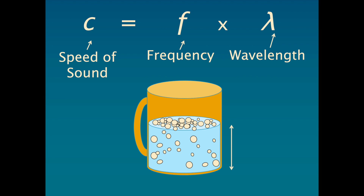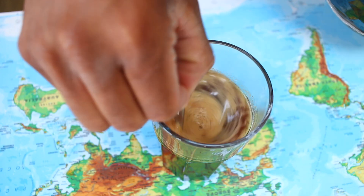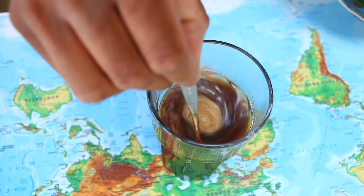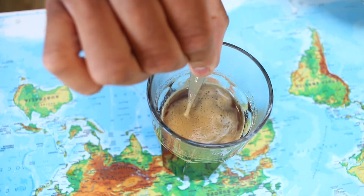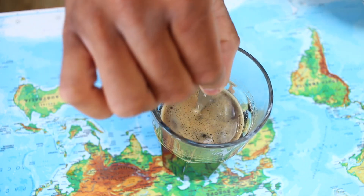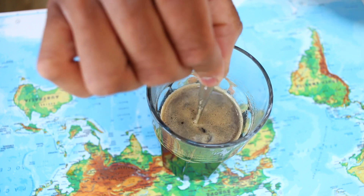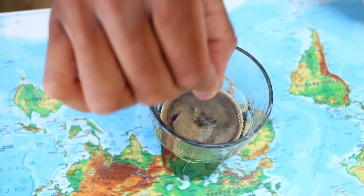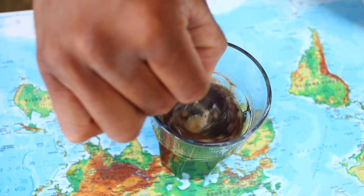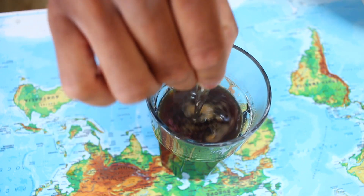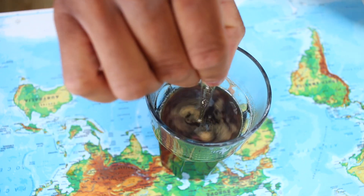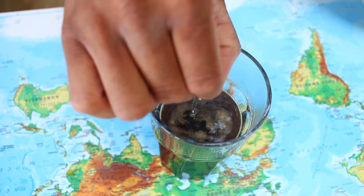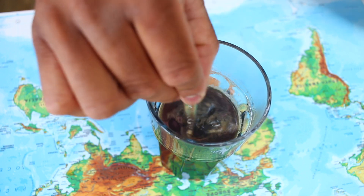The speed of sound in water is more than four times faster than the speed in air. After we've mixed up the granules and created all the bubbles, there are lots of compressible air pockets in the liquid. This causes the speed of sound in the liquid to decrease. As time passes, those buoyant bubbles start to rise to the top. This makes the liquid in the glass clearer, with fewer compressible pockets in it. This increases the speed of sound.